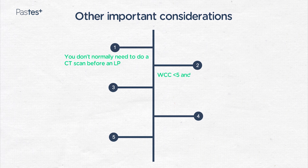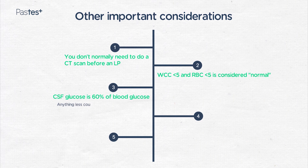White cell count less than 5 and an RBC less than 5 is normal. Normal CSF glucose is 60% of blood glucose — you should have both samples available. Anything lower than that suggests meningitis due to bacteria, TB, cryptococcus, cancer, subarachnoid hemorrhage, or sarcoidosis.